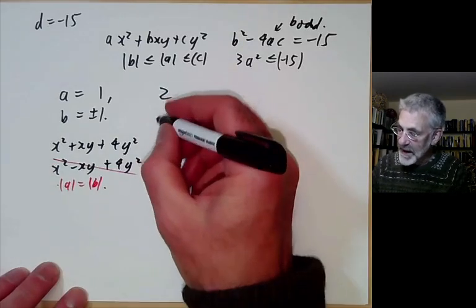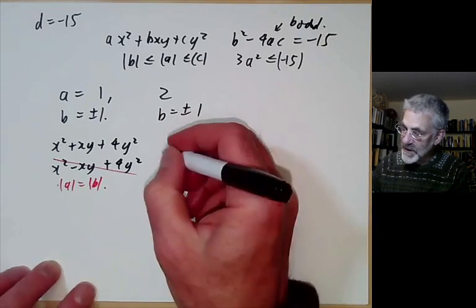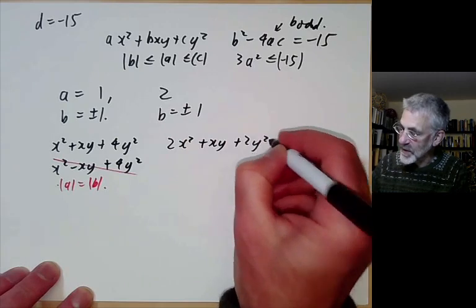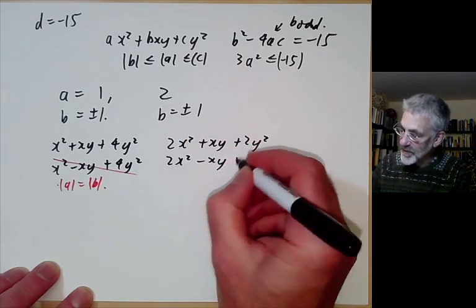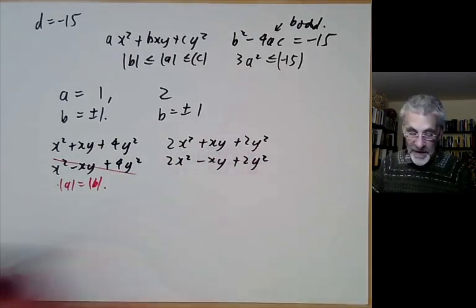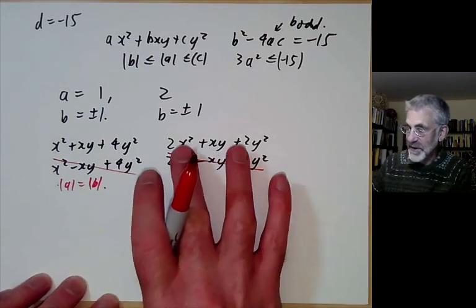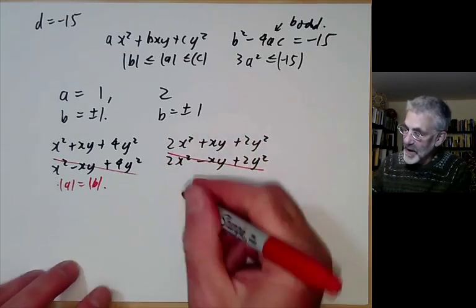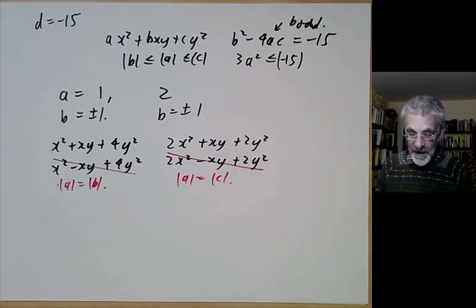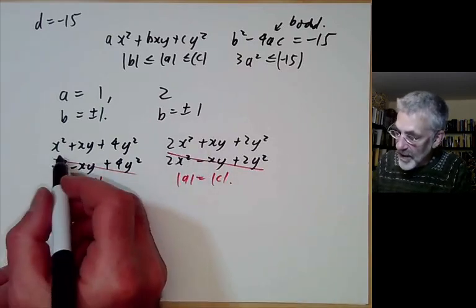For reduced forms with a = 2, we find b = ±1, giving 2x² + xy + 2y² and 2x² - xy + 2y². Since a = c, we can change the sign of b — switching x and y and changing the sign of one — and still have properly equivalent forms. So we can eliminate the second one. We therefore have two forms of discriminant -15.